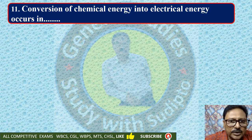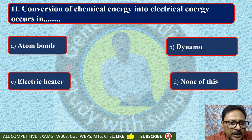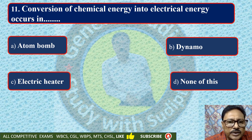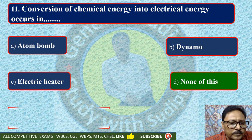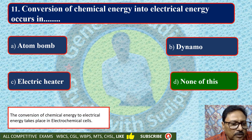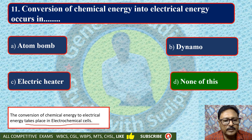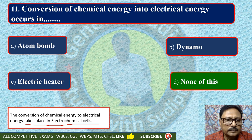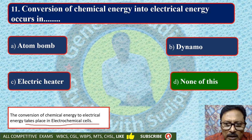Conversion of chemical energy into electrical energy occurs in — atom bomb, dynamo, electric heater, or none of these. Actually the answer is: the conversion of chemical energy to electrical energy takes place in electrochemical cells, also called dry cells. Dry cells are one example of conversion of chemical energy to electrical energy.